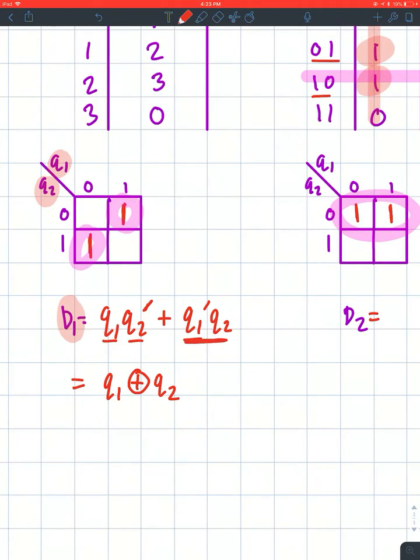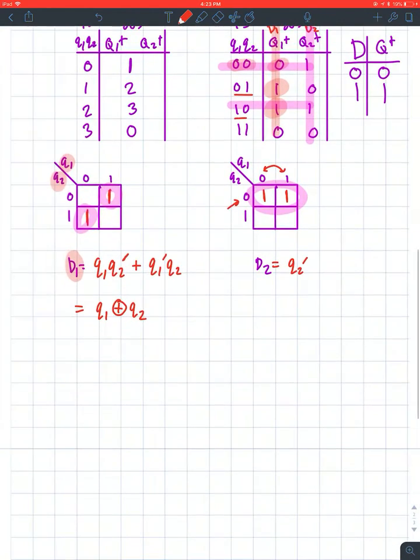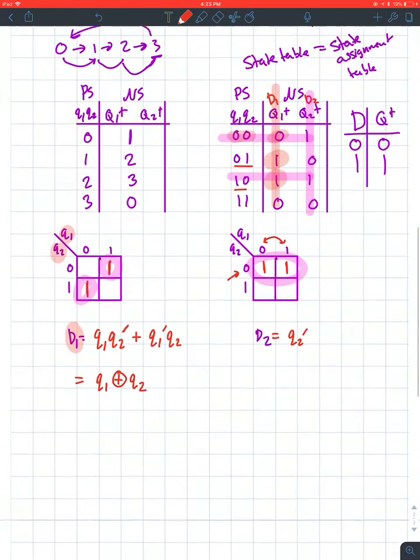That's because each term has Q1 and Q2, and one is knotted and the other isn't. For my D2, I see that Q1 is changing so I don't include it. Q2 is just 0, so it's Q2 not. If it was a 1, I'd have Q2 only, not Q2 not.